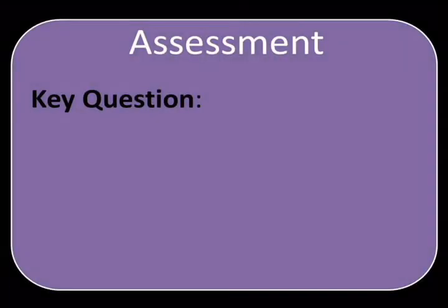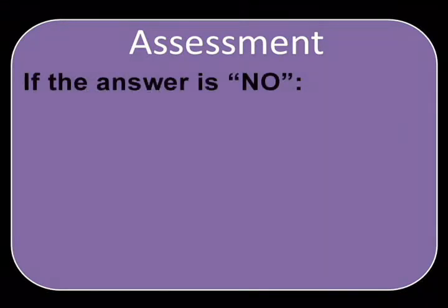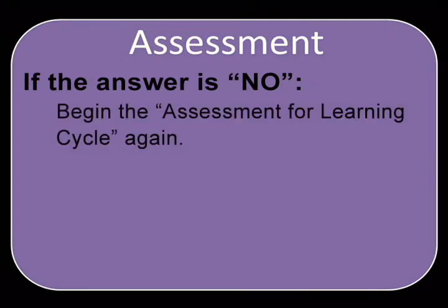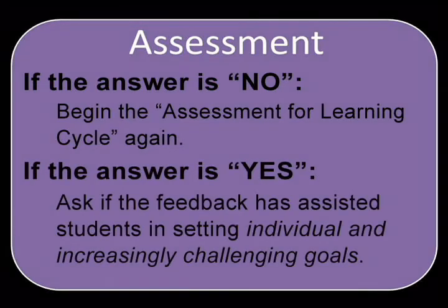After targeted instruction, the teacher must ask whether students are where they need to be. If the answer to this question is no, the teacher will need to begin the assessment for learning cycle again. If the answer is yes, the teacher must ask if the feedback provided has assisted students in setting individual and increasingly challenging goals.